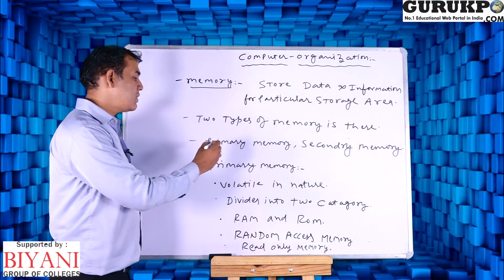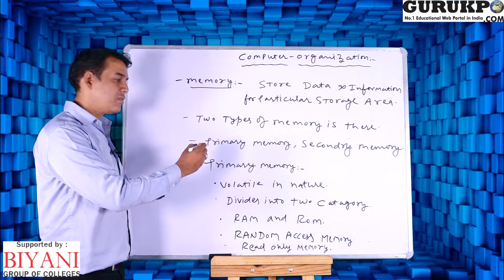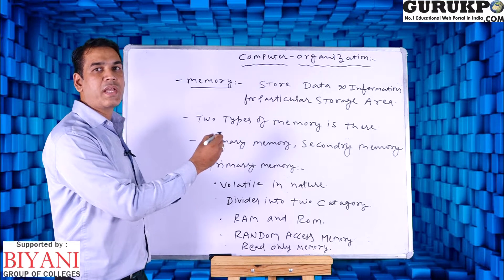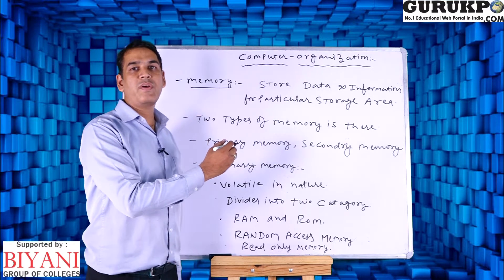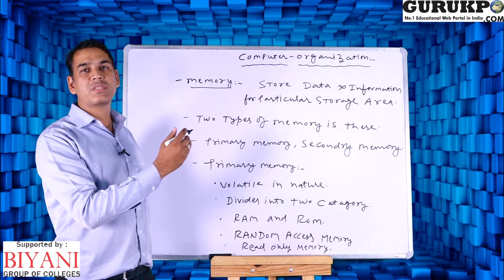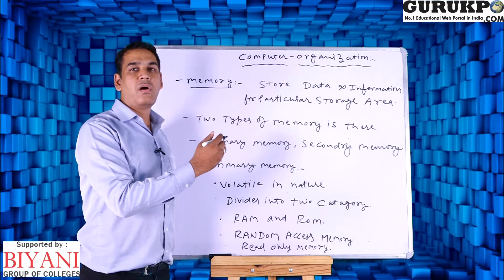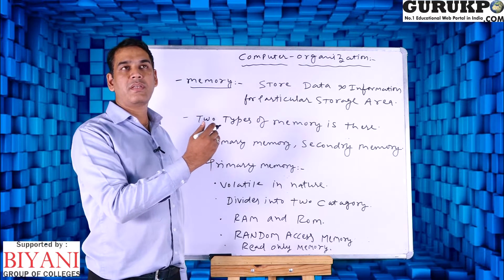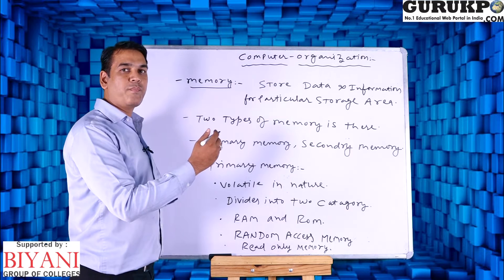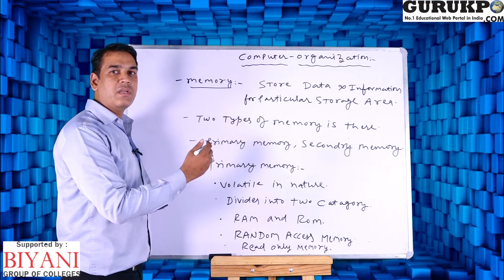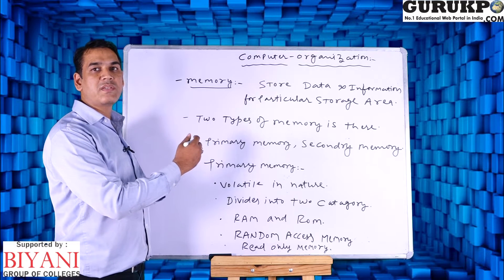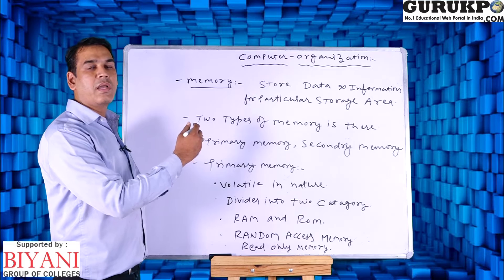Primary memory is volatile in nature. What do you mean by volatile? Volatile means that we lose the data whenever the power is gone. If power is present, the data will remain on the computer; otherwise it will be eliminated.